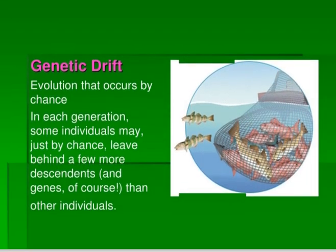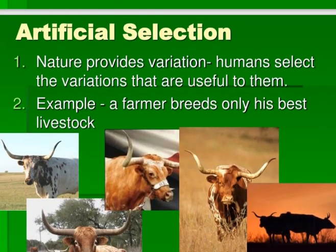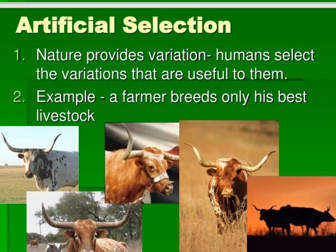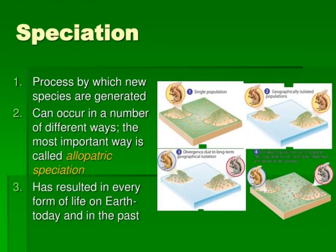Genetic drift is when by chance some individuals leave behind more descendants and genes than other individuals. Artificial selection is when humans select the variations that are useful to them — for example, a farmer breeds only his best livestock. Speciation is the process by which new species are generated and can happen in a number of different ways.